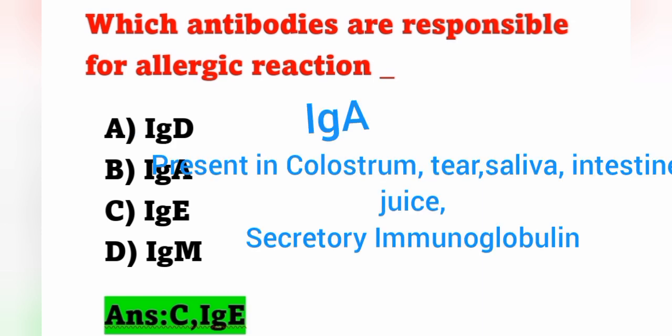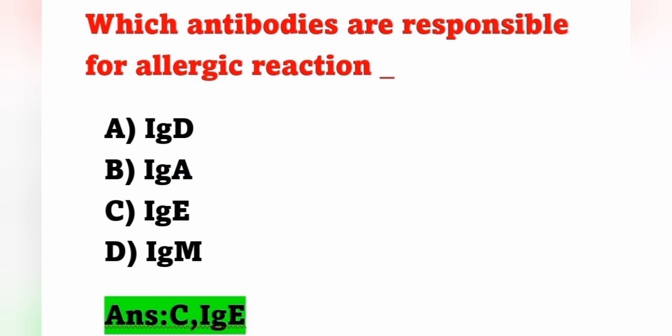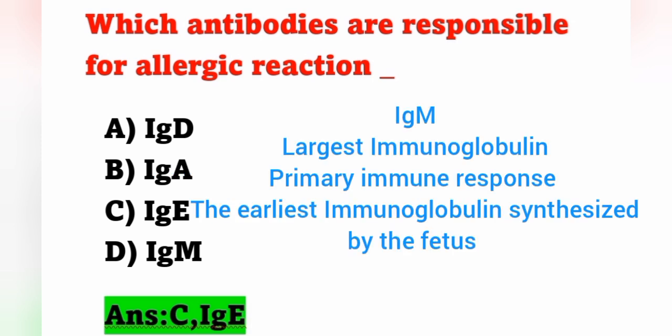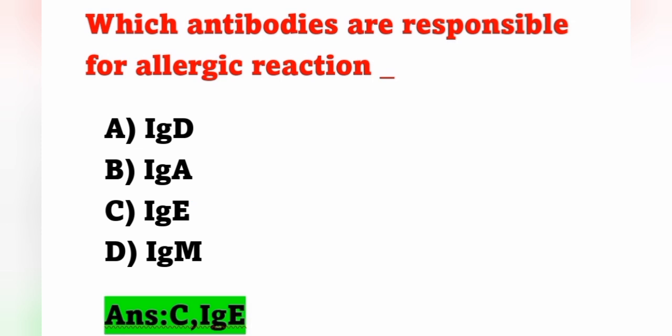IgA is present in colostrum (breast milk), tears, saliva, and intestinal juice — it is also known as secretory immunoglobulin. IgM is the largest immunoglobulin, mainly concerned with the primary immune response. The earliest immunoglobulin synthesized by the fetus is IgM.